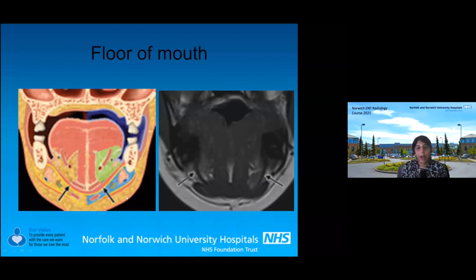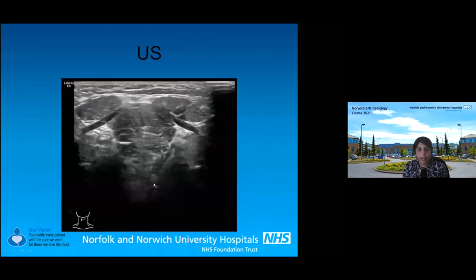A quick note on the floor of mouth: we've got the mylohyoid muscle and the geniohyoid muscle — these are floor of mouth muscles. Then you've got the genioglossus, hyoglossus — which are extrinsic tongue muscles — and the anterior digastric muscles. On ultrasound, you can see the anterior digastric muscles, the mylohyoid muscle which looks like a sling, and the tongue muscles.